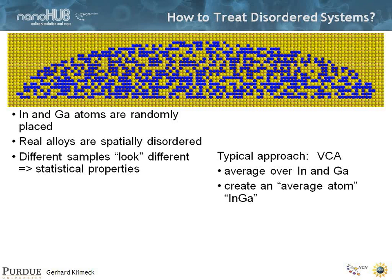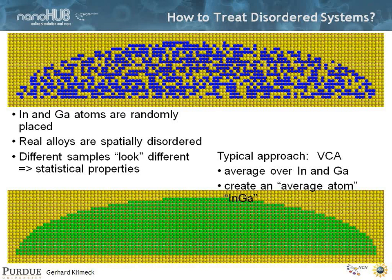The typical way this is done is in the VCA — the virtual crystal approximation approach — where you average over the indium and the gallium properties and create an average atom, indium gallium, depending on the indium and gallium concentration. You effectively average over blue and yellow and you get green — but you get a homogeneous green. There is no more disorder; it's a smooth material.